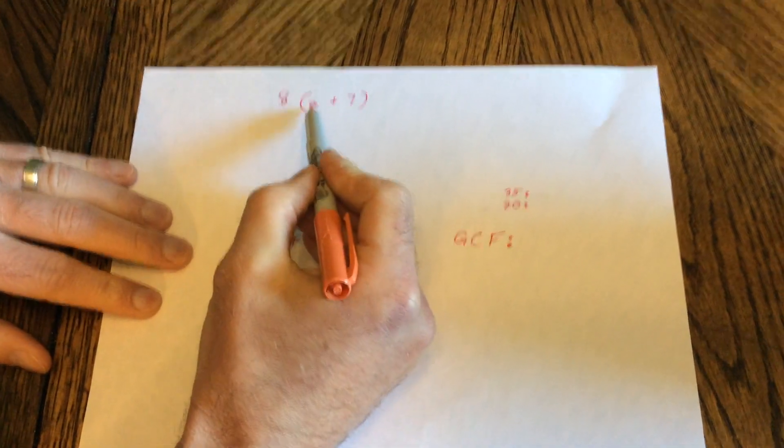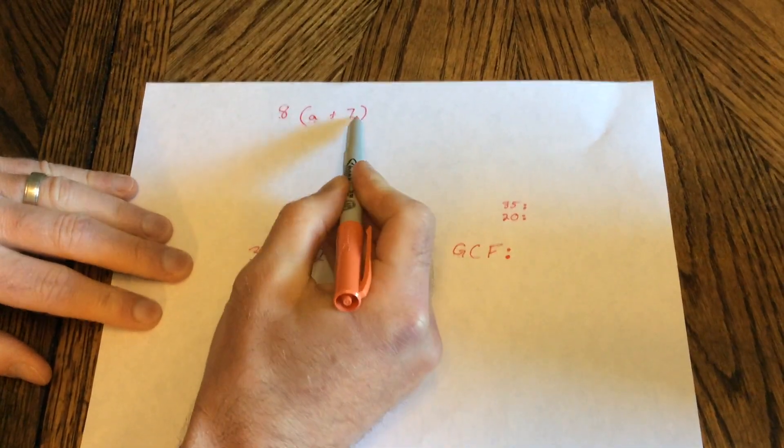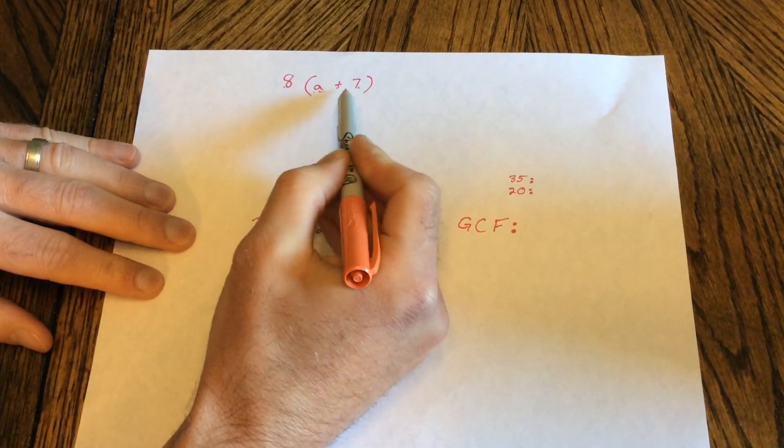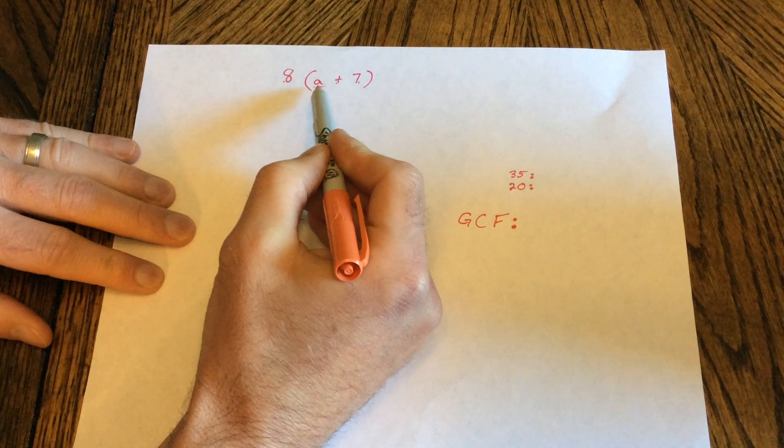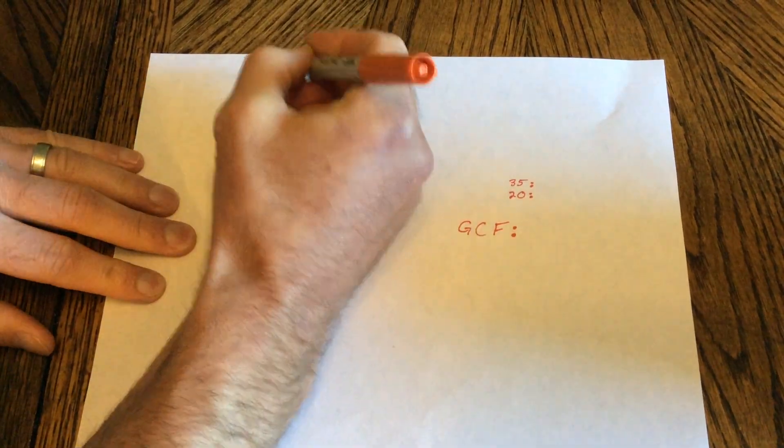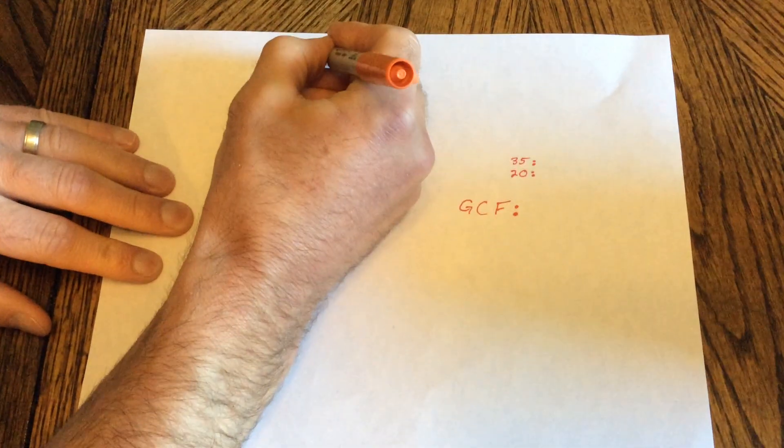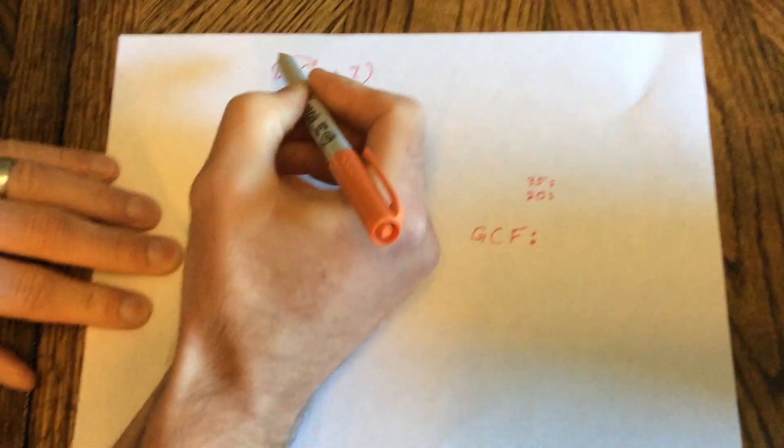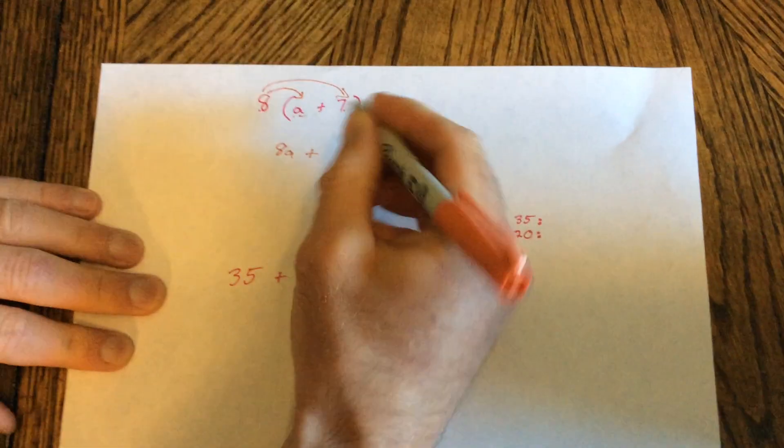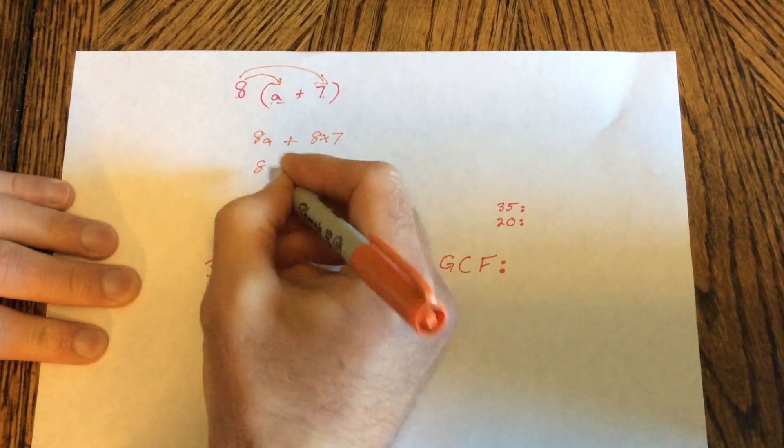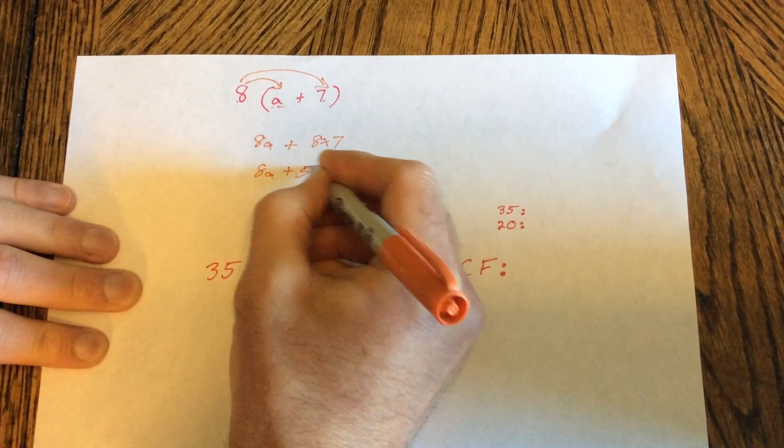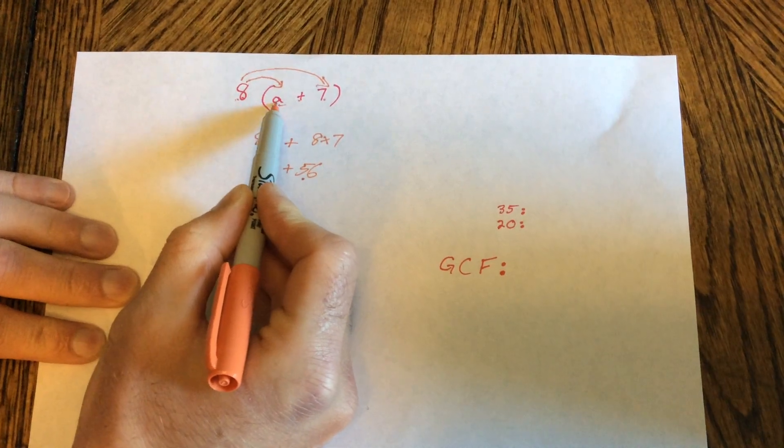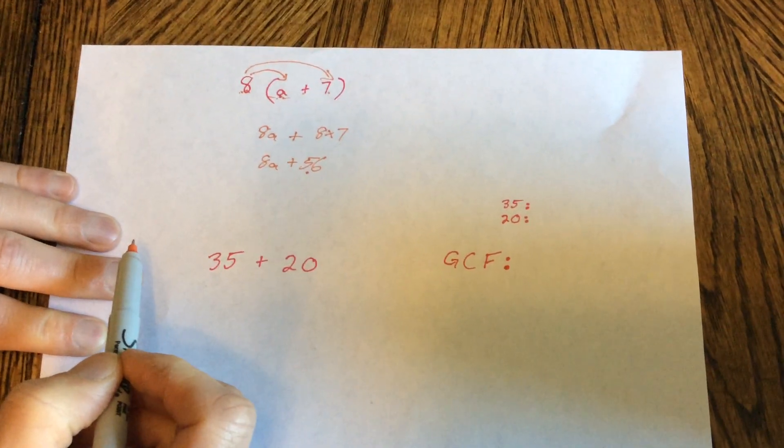So we did something like 8 times a plus 7 in parentheses. So normally we know order of operations, you would do a plus 7 first. Well, we can't even really do that when we have variables because you can't add them. They're not like terms. Well, we can use the distributive property to do 8 times a, which is 8a, plus 8 times 7, which gives us 56. So that's using the distributive property. 8a plus 56 is the same as 8 times a plus 7 in parentheses.